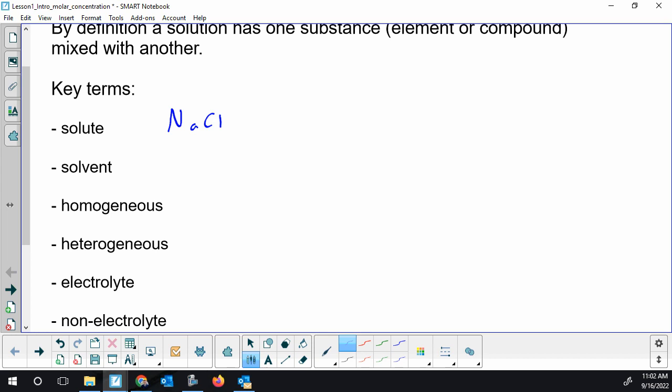So, an example, if you put sodium chloride in solution. The sodium chloride is going to be your solute. The sodium and the chloride, the ionic compound, will come apart.